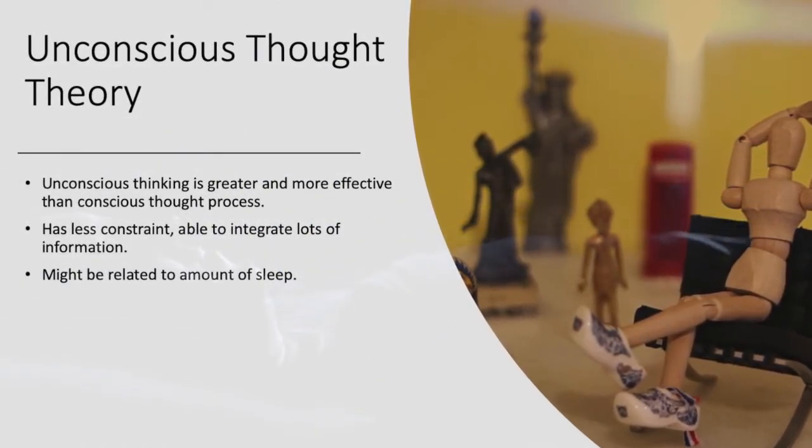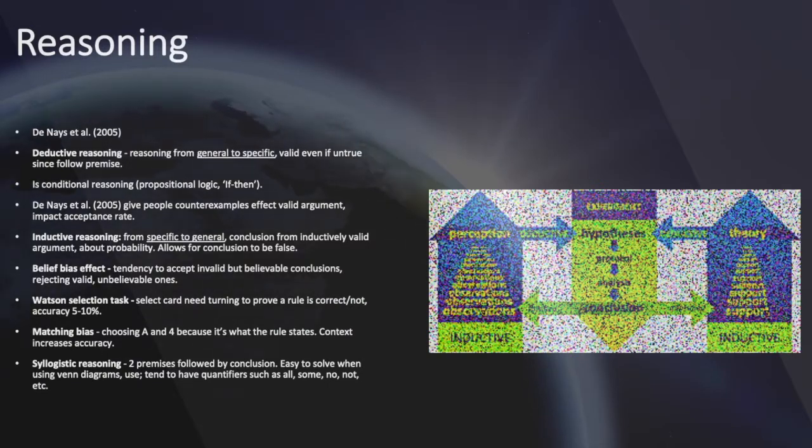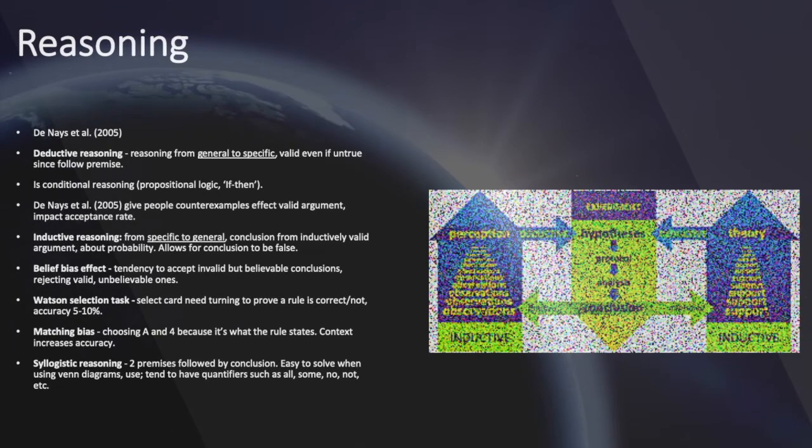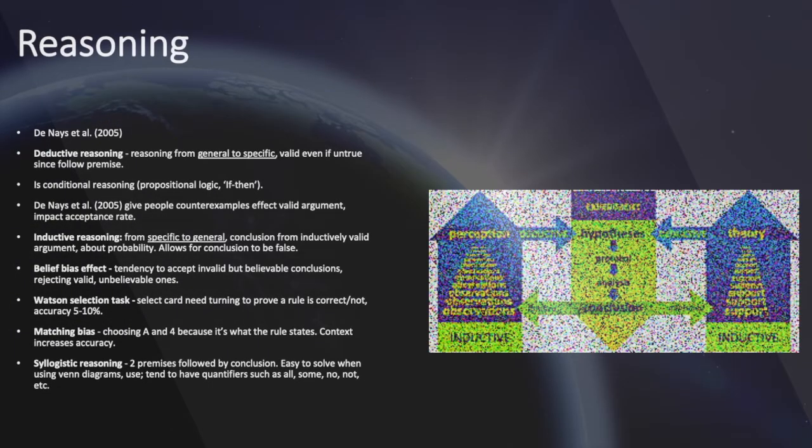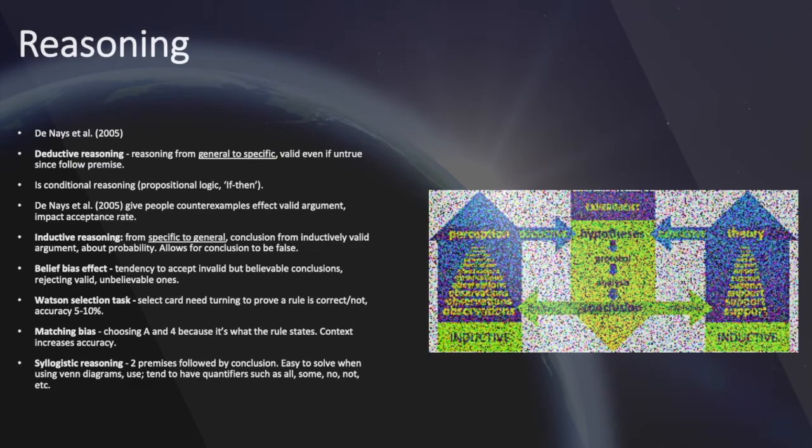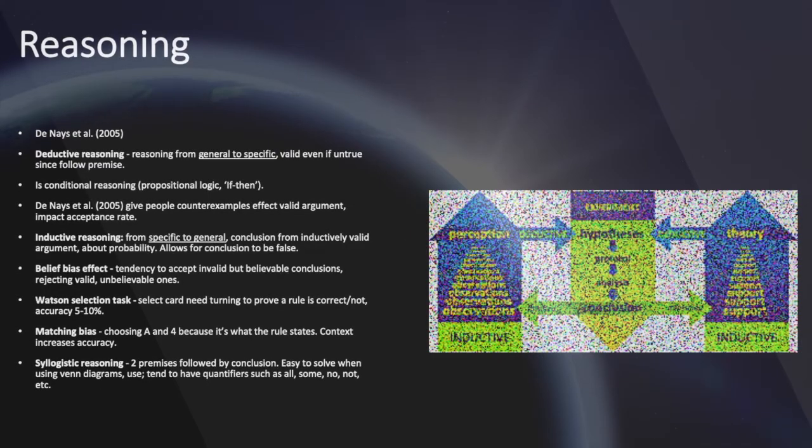Reasoning, according to Denays et al. 2005: deductive reasoning is defined as reasoning from general to specific and is valid even if untrue since it follows logical premises. There is conditional reasoning in deductive reasoning whereby it's based on propositional logic. If something happens, then something follows.